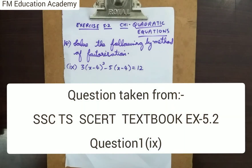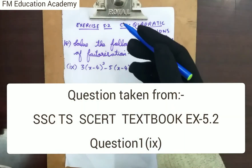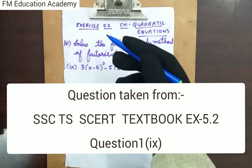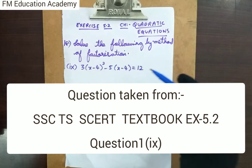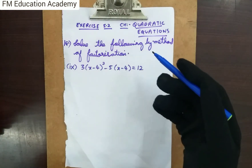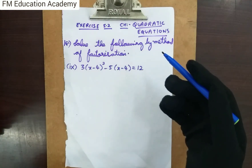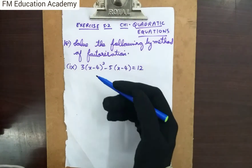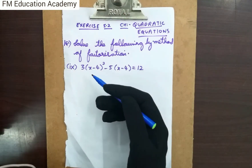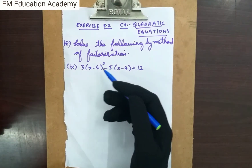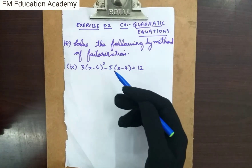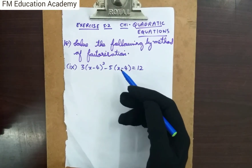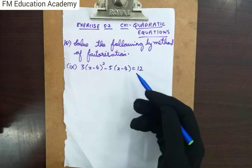The question is from the SSCSS textbook, exercise 5.2, first question, 9th bit. The question is: solve the following by the method of factorization. 9th bit: 3(x − 4)² − 5(x − 4) = 12.